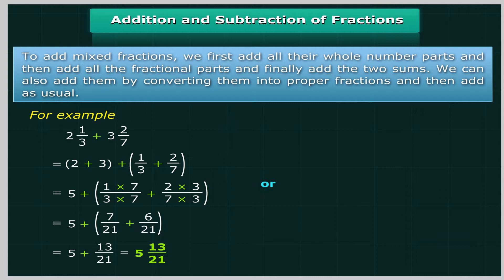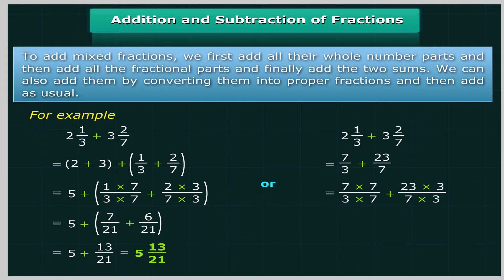Alternatively, we can add mixed fractions by converting them into improper fractions and then adding as usual. For example, 2⅓ plus 3²⁄₇ equals 7 upon 3 plus 23 upon 7, which equals (7×7) upon (3×7) plus (23×3) upon (7×3), which equals 49 upon 21 plus 69 upon 21, which equals 118 upon 21, or 5 and 13 upon 21.